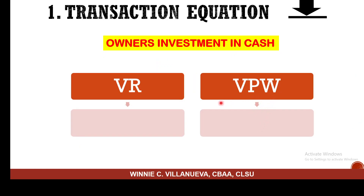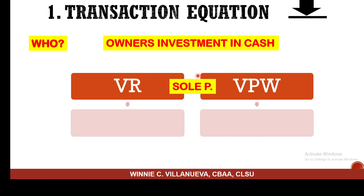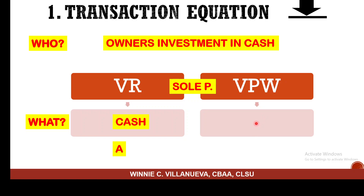Let's have the first sample. You cannot have a business without the investment of the owner. The first question you have to ask yourself is: who? Because what you will receive and what you part with depends on who is involved. Of course, the sole proprietor. What does the sole proprietorship receive from the owner? The owner gives cash — that is what is received. And when you receive that cash as a sole proprietorship, what do you give out? It is the right of ownership.